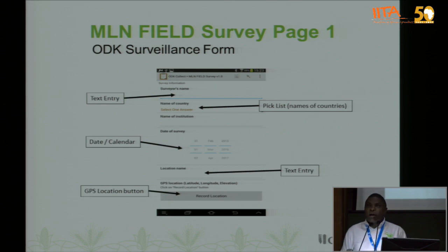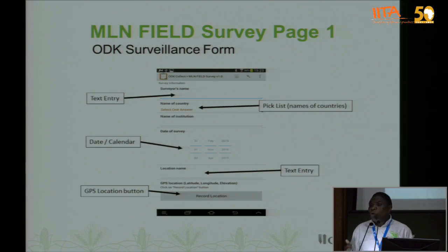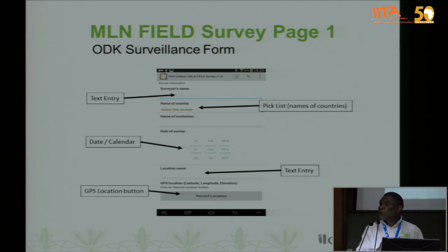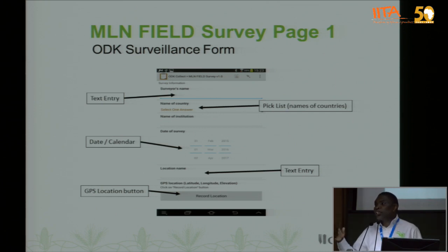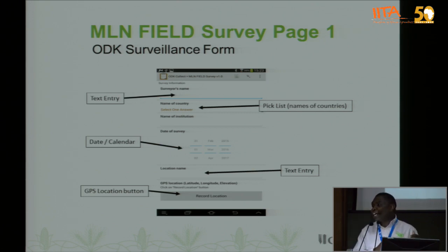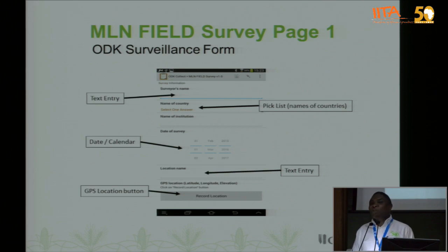The beauty of this electronic form is that when you enter the date, you cannot manipulate it. When you are doing a particular activity in the field, it takes the date displayed on the gadget — the phone or tablet. In my experience with surveillance, sometimes when you send teams to the field, they may only look at two fields, come home, then manipulate paper forms and claim they surveyed more than 50 farms. With this application, you won't be able to do that.